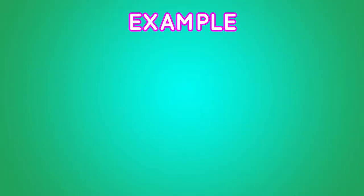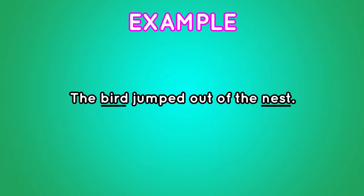Let's start with nouns. Nouns are words that we use to name people, places, animals, and things. And when I say things I'm not only talking about tangible objects — this word also encloses ideas, concepts, qualities, and actions. Let's see an example: "The bird jumped out of the nest." The underlined words are examples of nouns.